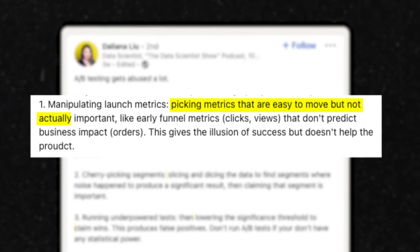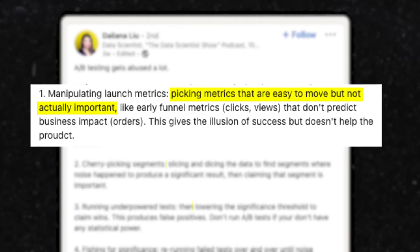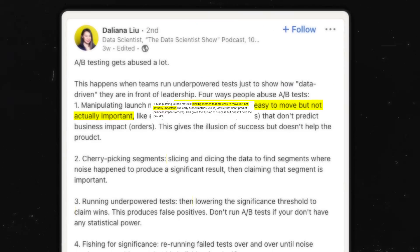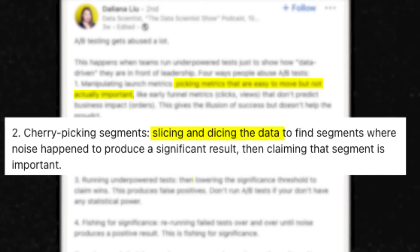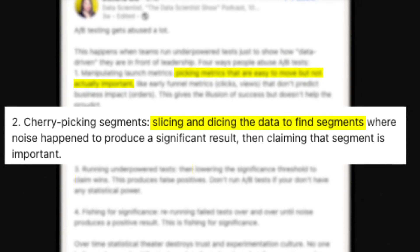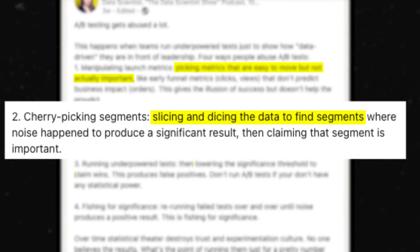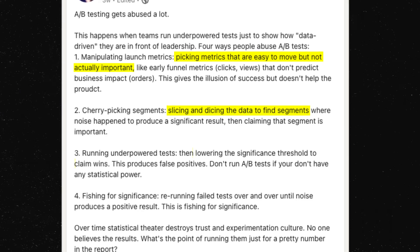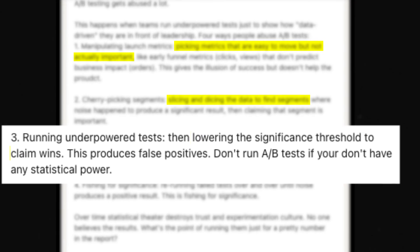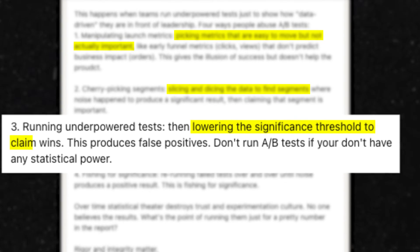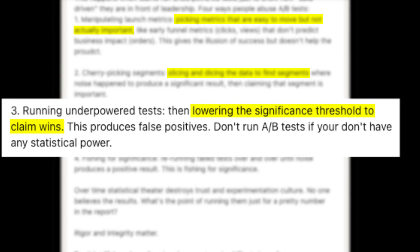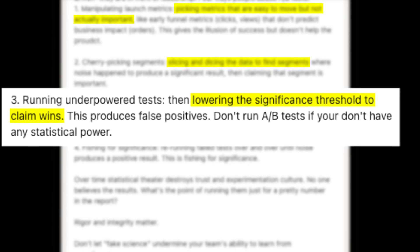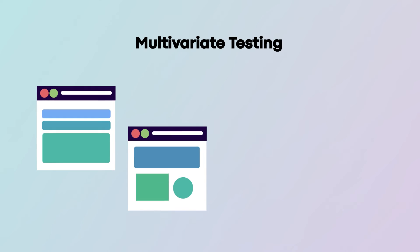There are also a ton of A/B testing watch-outs. You want to make sure the metric you're measuring is something that's easy to move but also super important — it needs to actually matter. Also make sure you're choosing the right segments, not just the ones that work in your favor. If significance is just barely over the threshold, that's a red flag — results should be clearly statistically significant, not just barely over the line.